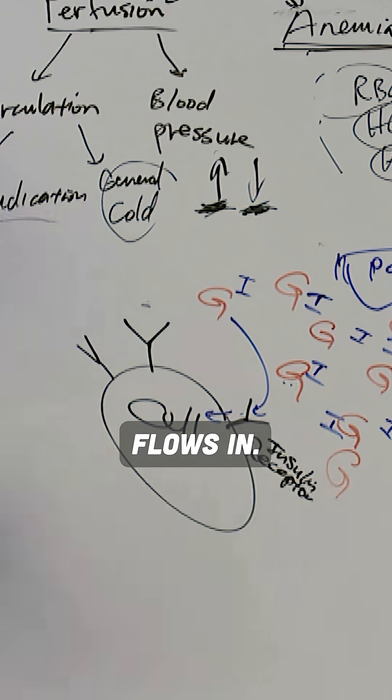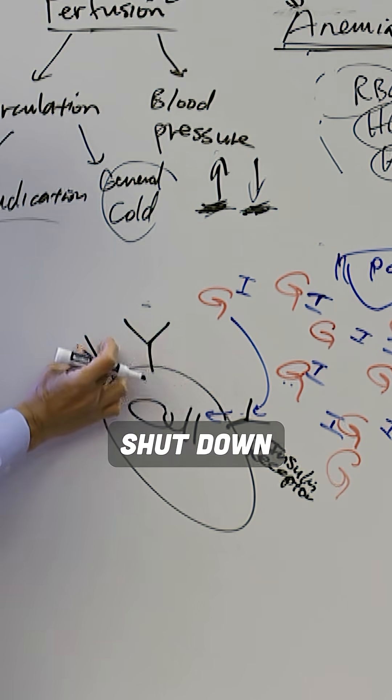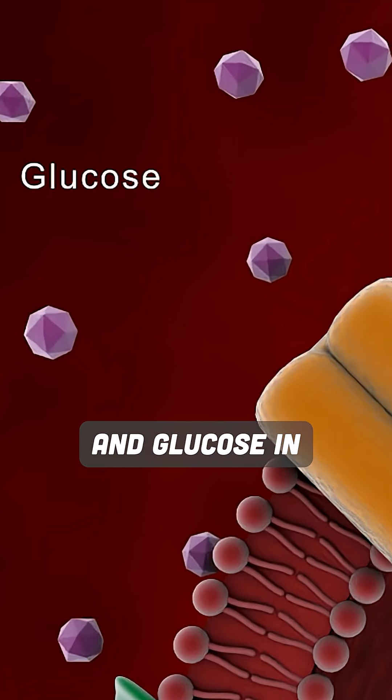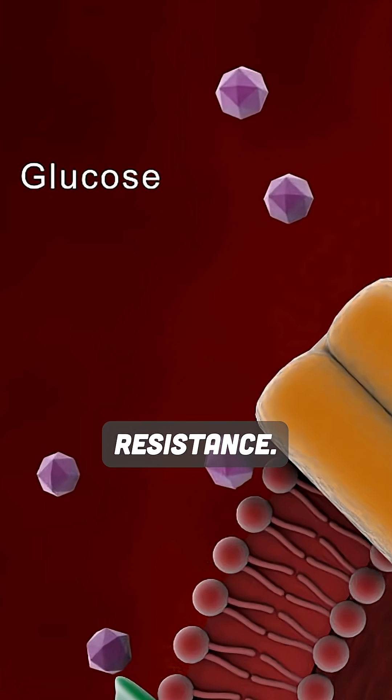Like a valve that controls how much flow is in, if you have way too much insulin, the valve will actually shut down to not let so much insulin and glucose in. This is called insulin resistance.